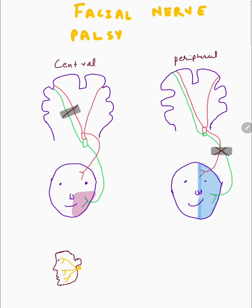Just behind the ear, there is the stylomastoid foramen, and this is where the facial nerve comes out. If the peripheral lesion occurs here, the entire face will be affected because the facial nerve divides into the buccal and zygomatic branches at this point. In contrast, in a central lesion, only the lower face is affected, because the lower face is supplied only by fibers from the contralateral cortex. So when there is a lesion to the supranuclear fibers from the contralateral cortex, that affects the lower face only.